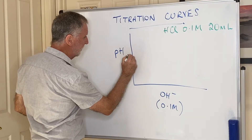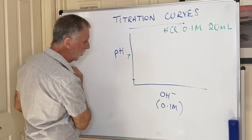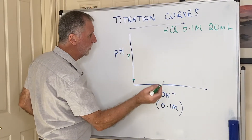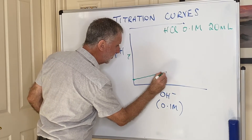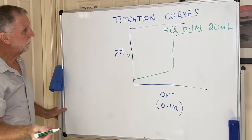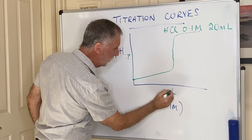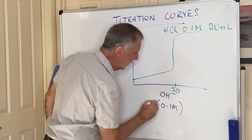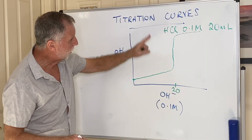On the scale, with 7 in the middle and 14 at the top, we'd start down at pH 1. As we add the alkali to the acid, the pH will gradually start to rise, and then all of a sudden it will shoot up. This volume here represents the equivalence point of the titration, which would be 20 mL because the concentrations are the same and they react one to one.